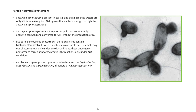Aerobic anoxygenic phototrophs are present in coastal and pelagic marine waters. They are obligate aerobes, requiring oxygen to grow, that capture energy from light by anoxygenic photosynthesis — the phototrophic process where light energy is captured and converted to ATP without the production of oxygen. Like purple anoxygenic phototrophs, these organisms contain bacteriochlorophyll. However, unlike classical purple bacteria that carry out photosynthesis only under anoxic conditions, these anoxygenic phototrophs carry out photosynthetic light reactions only under oxic conditions. They include bacteria such as Erythrobacter, Roseobacter, and Citromicrobium, all genera of Alphaproteobacteria.